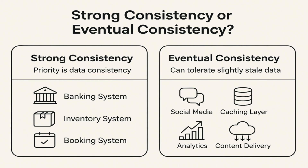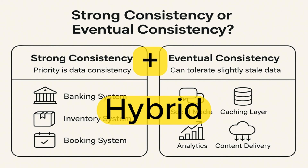In eventual consistency, you get faster reads and writes and an always-available system. But in reality, it's not always black or white — it's often a gray area. In real systems, many use a hybrid approach, where they apply strong consistency for consistency-critical operations and eventual consistency for less critical data.